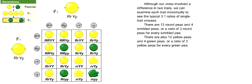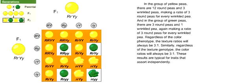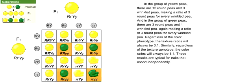Although our cross involved a difference in two traits, we can examine each trait individually to see the typical 3 to 1 ratios of single trait crosses. There are twelve round peas and four wrinkled peas, a ratio of three round peas for every wrinkled pea. There are also twelve yellow peas and four green peas, a ratio of three yellow peas for every green pea. In the group of yellow peas, there are twelve round and three wrinkled, making a ratio of three round for every wrinkled. In the group of green peas, there are three round and one wrinkled — again, a ratio of three round for every wrinkled. Regardless of the color phenotype, the texture ratios will always be three to one. Similarly, regardless of the texture genotype, the color ratios will always be three to one. These results are typical for traits that assort independently.